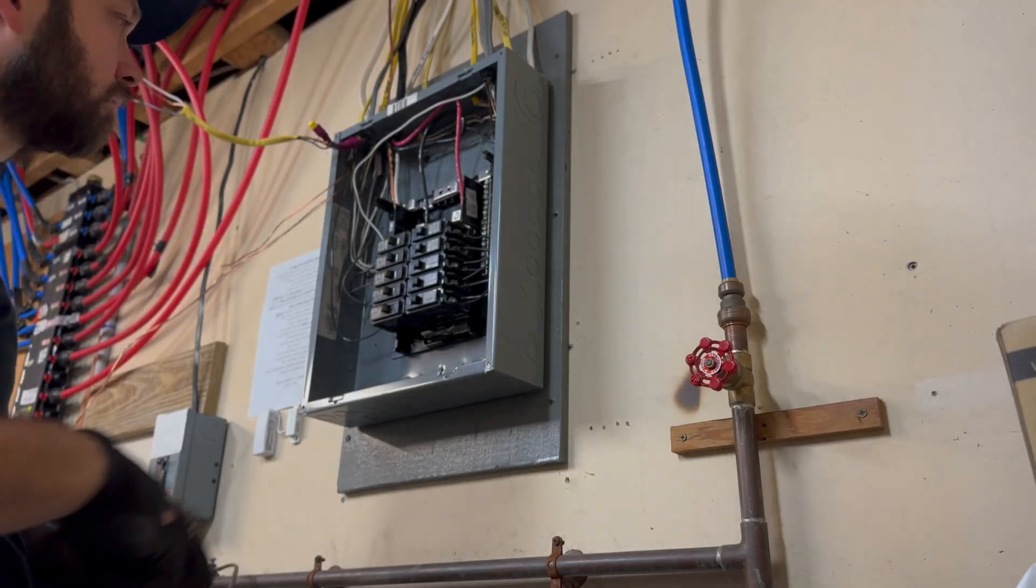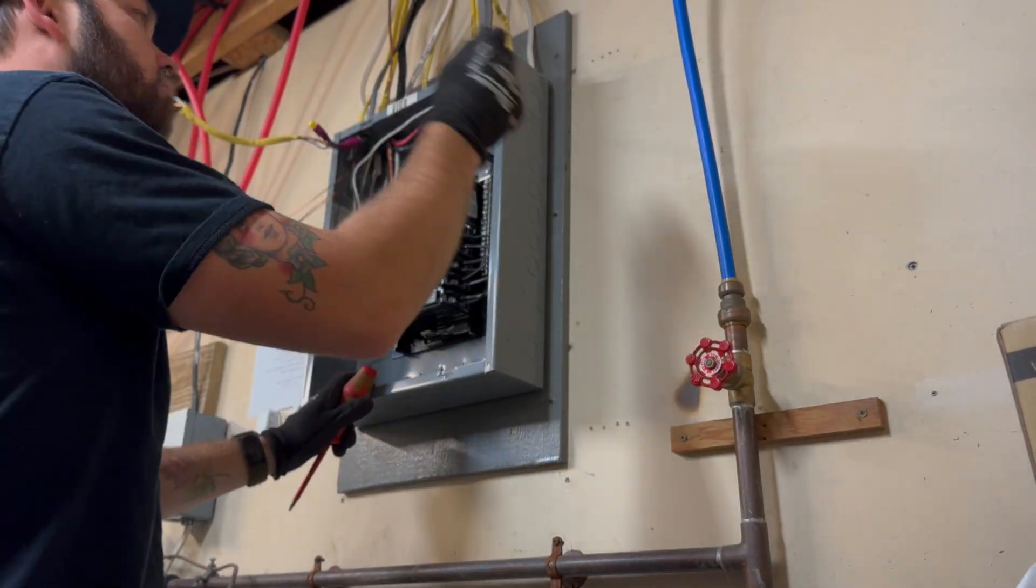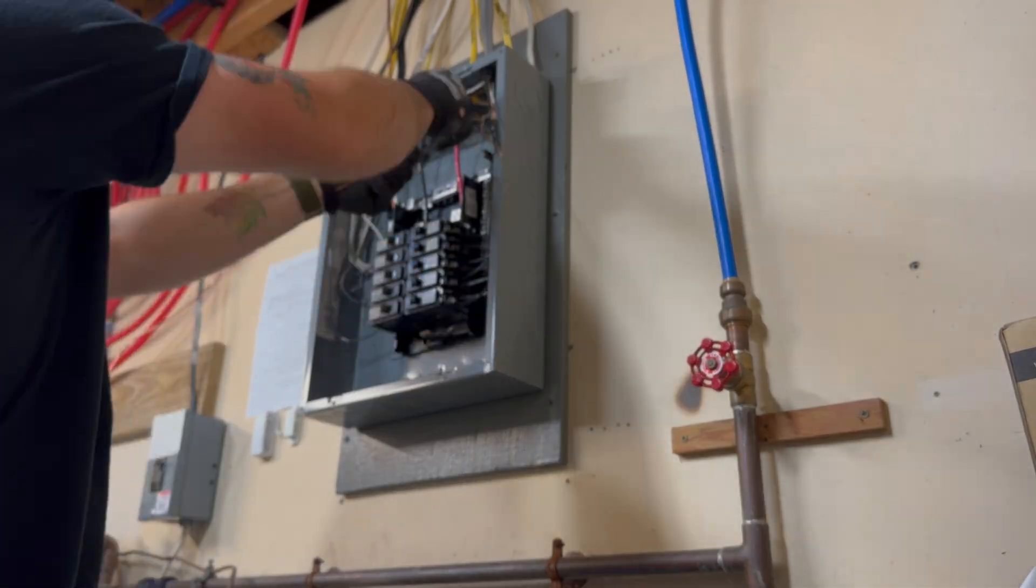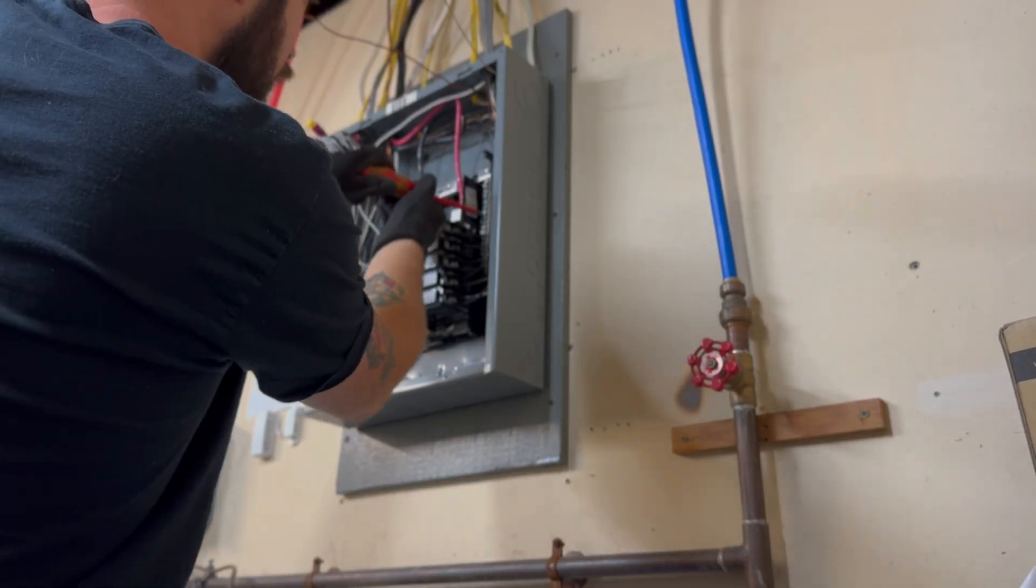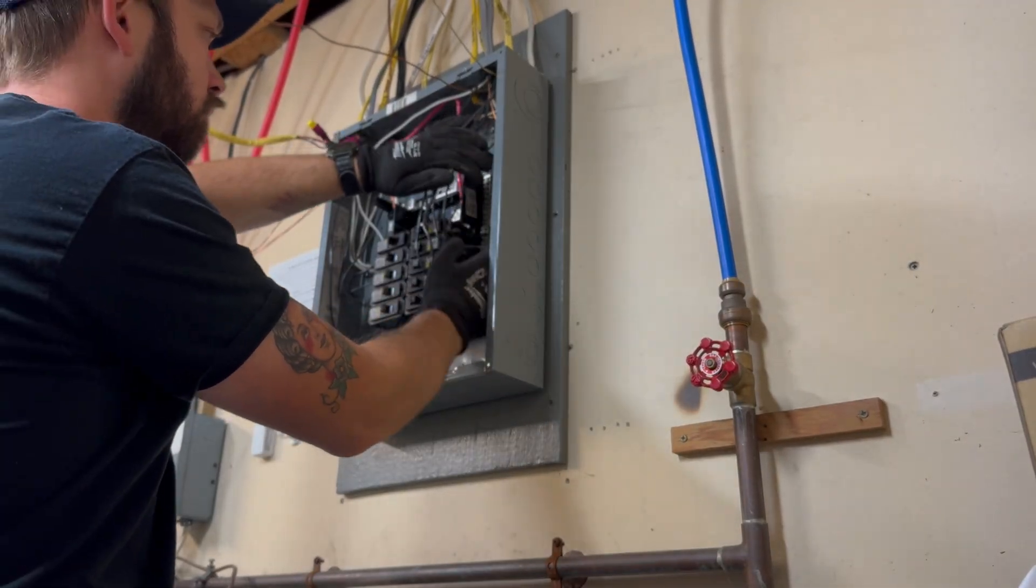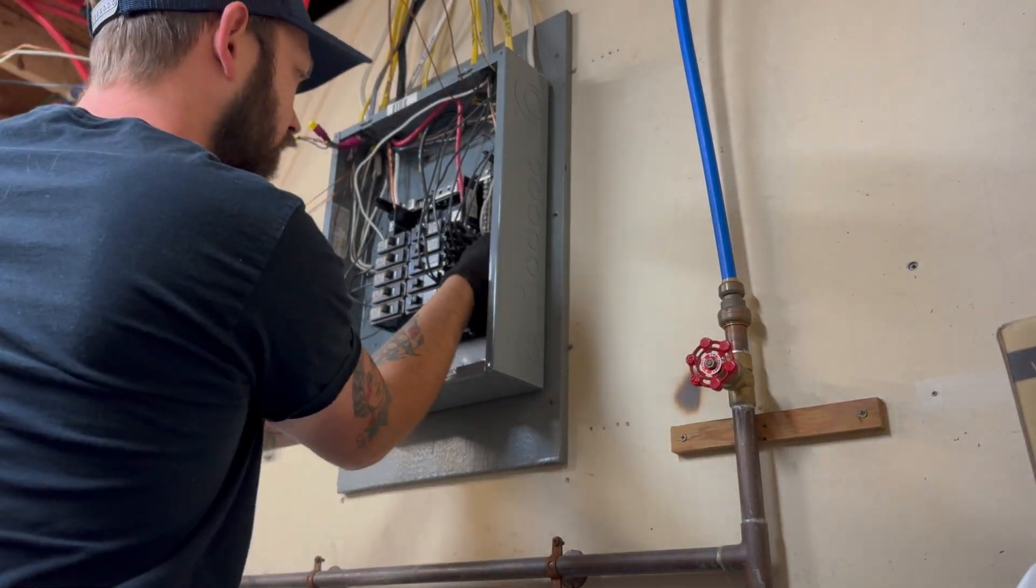Getting all the neutrals and the grounds separated, we're going to re-terminate all the neutrals. Just making some room. This was relatively simple because it was such a small panel. It wasn't just a box full of spaghetti, so it was overall a pretty smooth process.